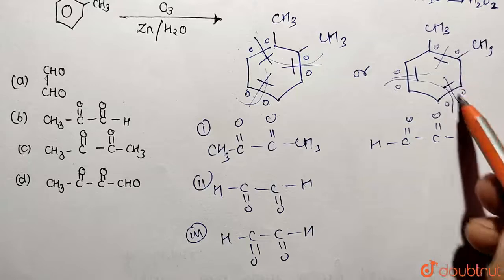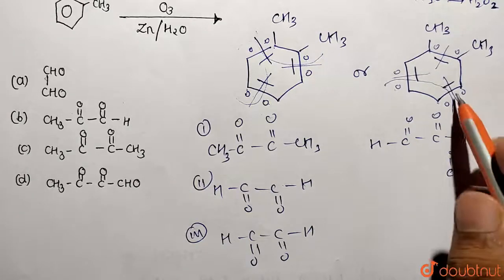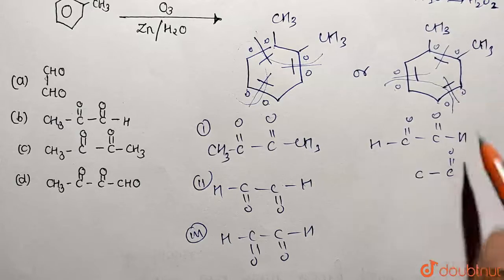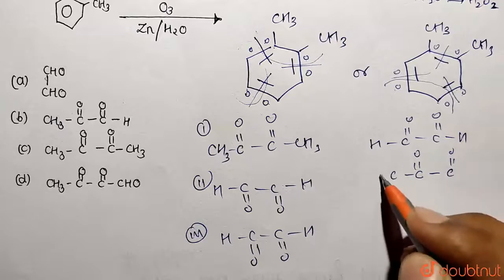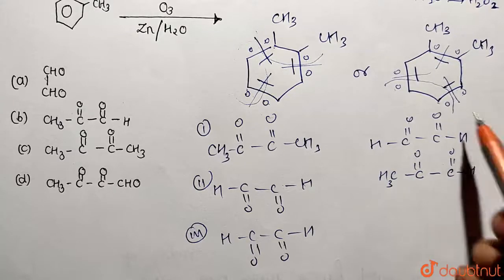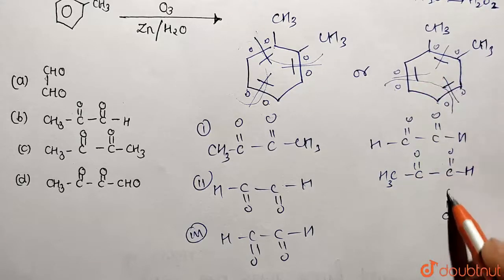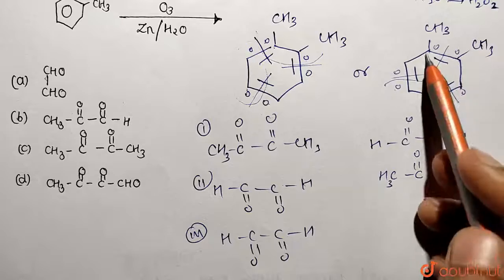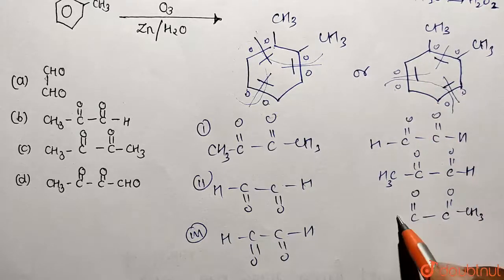From the remaining carbons of the second resonance structure: one carbon gives C=O connected to another carbon carrying C=O and a CH₃ group. Similarly, the other fragment gives C=O carrying a CH₃ group connected to a carbon with C=O. These two units are the same product.